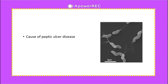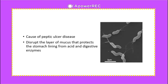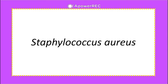Helicobacter pylori are bacteria that can cause peptic ulcer disease. They disrupt the layer of mucus that protects the stomach lining from acid and digestive enzymes.